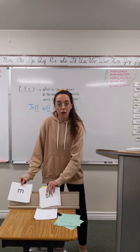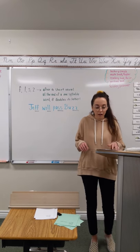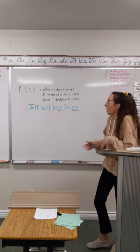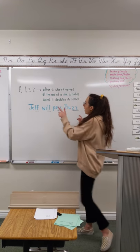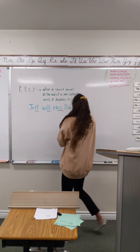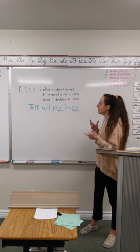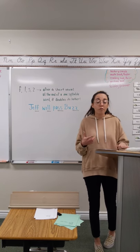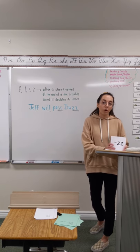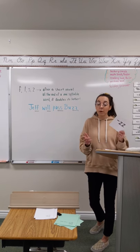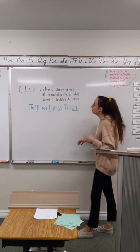Okay, go ahead and put all of your blending stuff away. Put your whiteboard to the side so that you're not paying attention to that. And we're going to go over a new spelling rule. So, F-L-S-Z. When they are after a short vowel at the end of a one syllable word, it doubles its letter. That's a spelling rule. It's not a phonics rule necessarily, other than just we're going to be reviewing this for memory and for our blending.